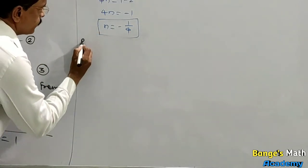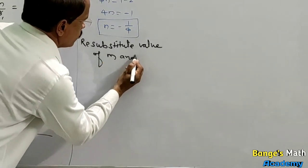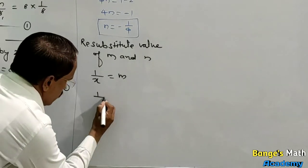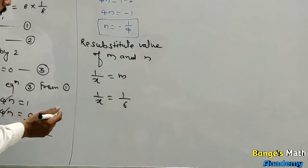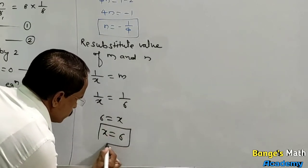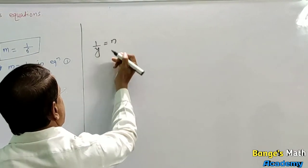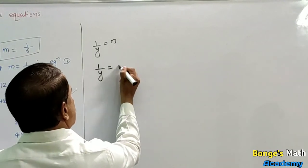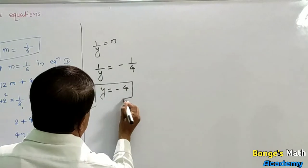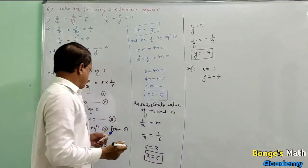Re-substitute the values of m and n. Since 1 upon x equals m and m equals 1 upon 6, by cross multiplication x equals 6. Since 1 upon y equals n and n equals minus 1 upon 4, by cross multiplication y equals minus 4. So the solution is x equal to 6 and y equal to minus 4.